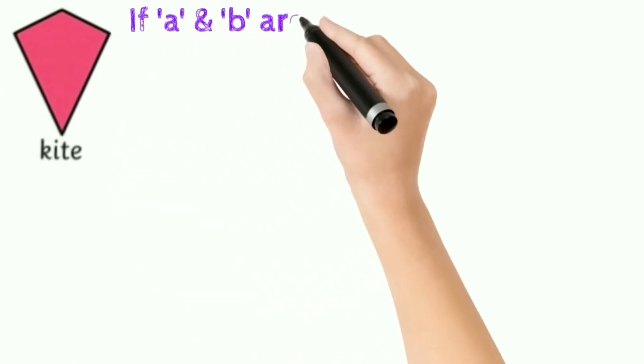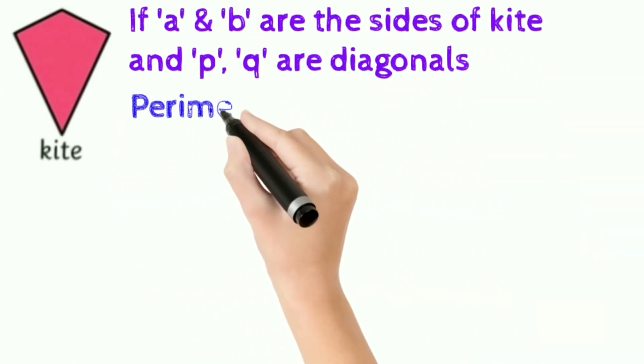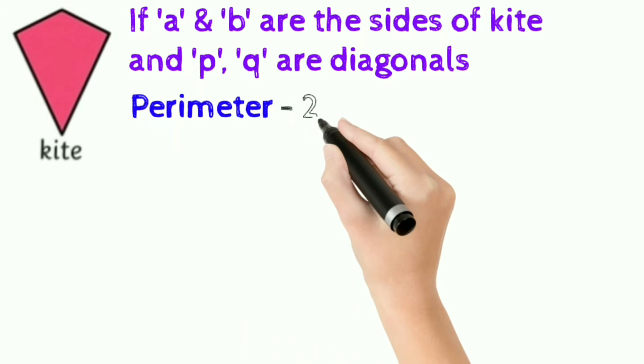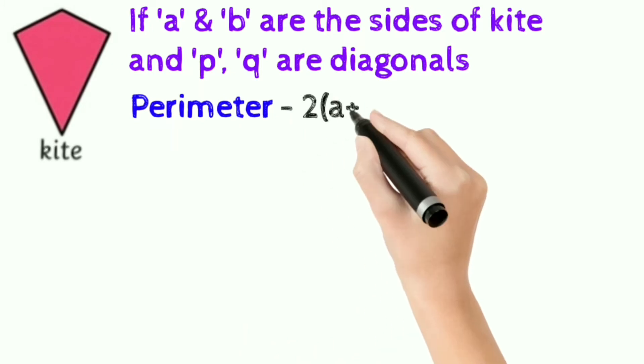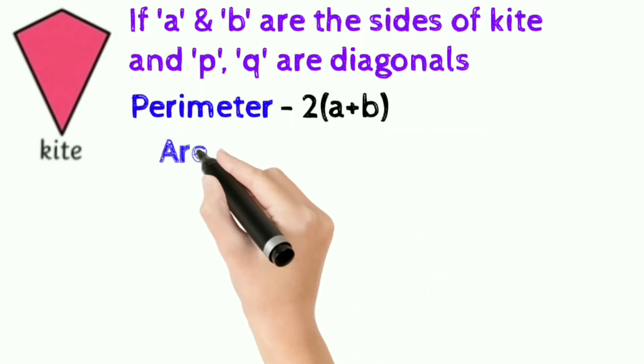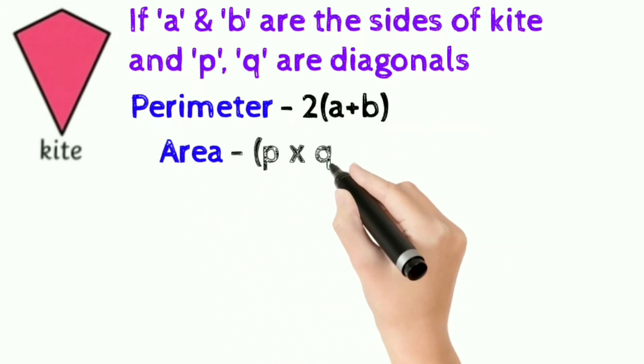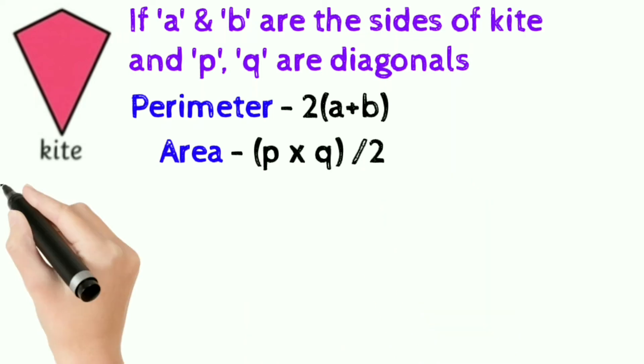Kite: if a and b are the sides of the kite and p and q are the diagonals, perimeter of the kite is 2 into (a plus b), and area of the kite is p into q divided by 2.